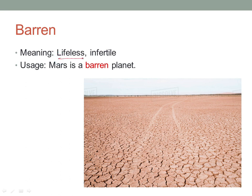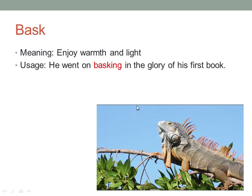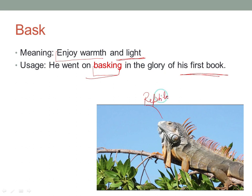The next word is 'barren'. Barren means lifeless or infertile. For example: 'Mars is a barren planet.' Then 'bask' — bask means to enjoy warmth and light. For example: 'He went on basking in the glory of his first book,' enjoying the warmth of his success. This reptile is also basking in the warmth of the sun, because reptiles are cold-blooded and need sunlight for their day-to-day activities.